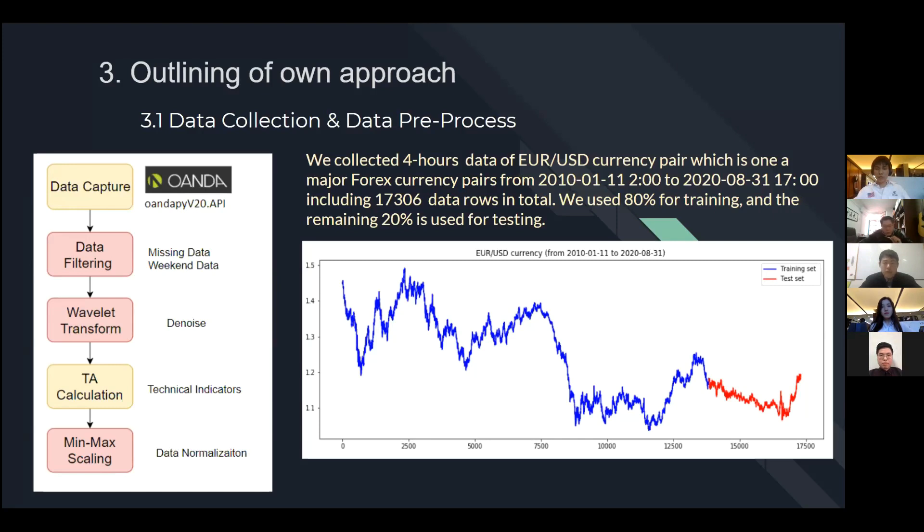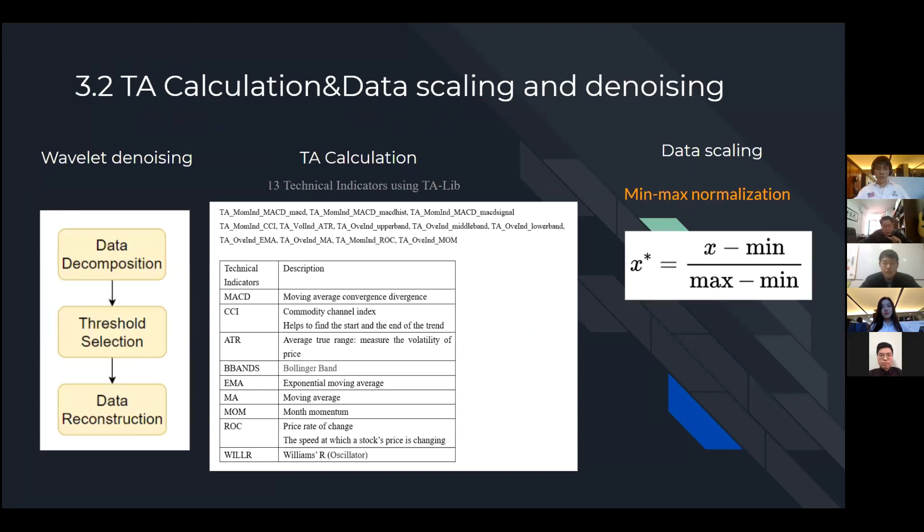And the next is about the details of the data pre-processing. The first one is wavelet denoising. And we follow three steps: data decomposition, threshold selection, and data reconstruction. And in terms of the TA calculation, we calculate 13 technical indicators using TA lab. The table in the middle shows the technical indicators we're using. It includes MACD, CCI, moving average, and Bollinger band. And the last one is the data scaling. We can see the screenshot shows the formulation. It is a min-max normalization. It is a linear transformation of the original data. So the result falls into the interval from zero to one. It makes our result more accurate and more efficient in the gradient descent.